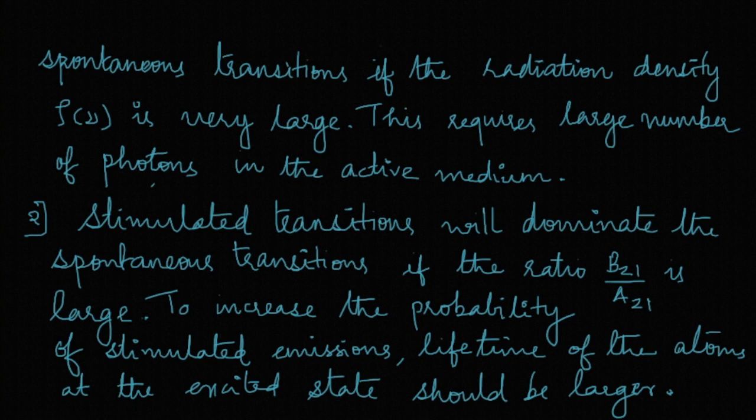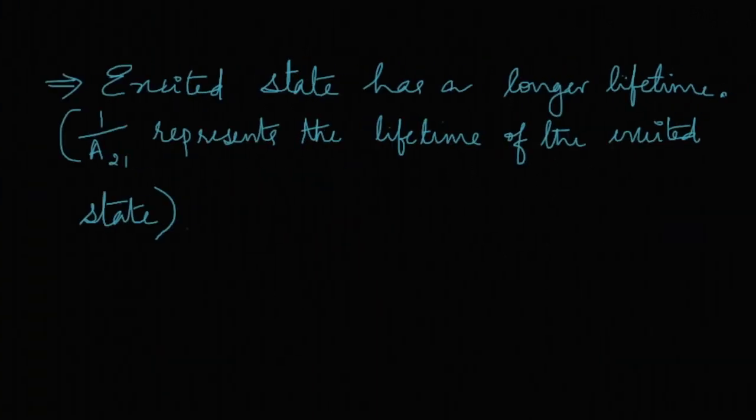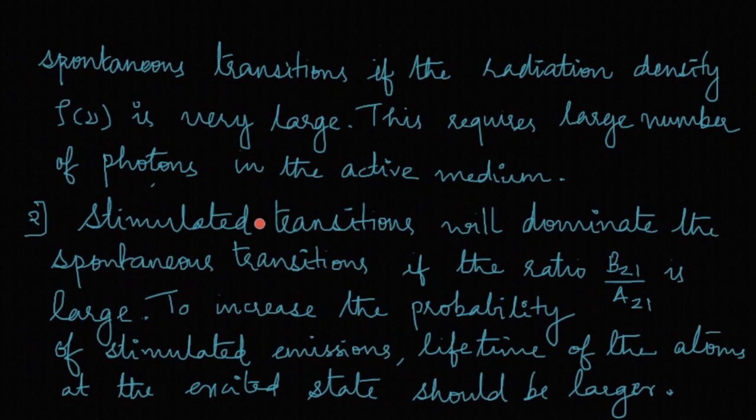Now second one is stimulated transitions will dominate if you see that the ratio B21 by A21 is also large. Now to increase the probability of stimulated emission, lifetime of the atom in the excited state should be larger because you know 1/A21 is the lifetime. So excited state should have a longer lifetime - in that case also stimulated emissions may dominate the spontaneous transitions. So that is about the condition for stimulated emission to dominate spontaneous emission, and we have seen the rate of stimulated transition to spontaneous transitions here.